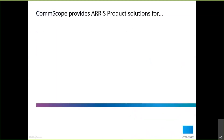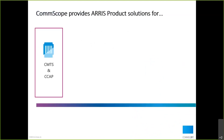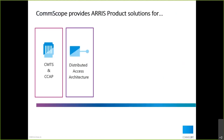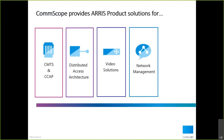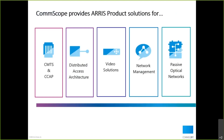Comscope provides broadband network solutions with a variety of AERIS products. We have CMTS and CCAP, distributed access architecture, video solutions, network management, passive optical networks, and much more. Now I'm going to pass it over to Tom, who's going to take an in-depth look at each of these product lines and go over some of the courses that we have available.